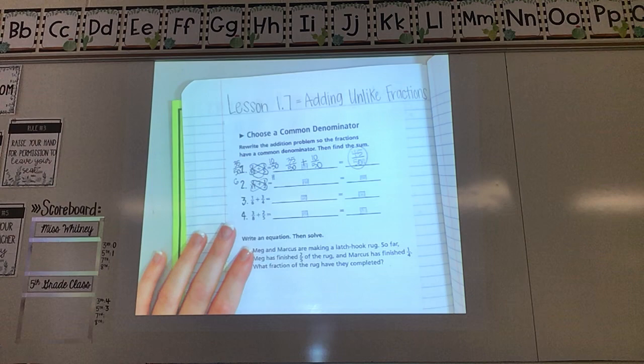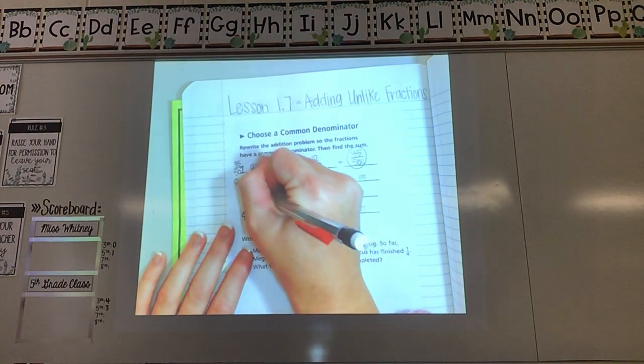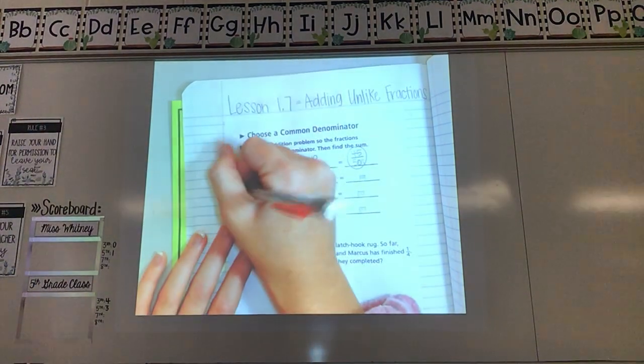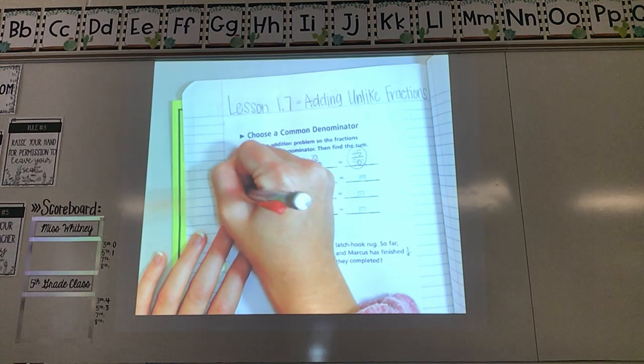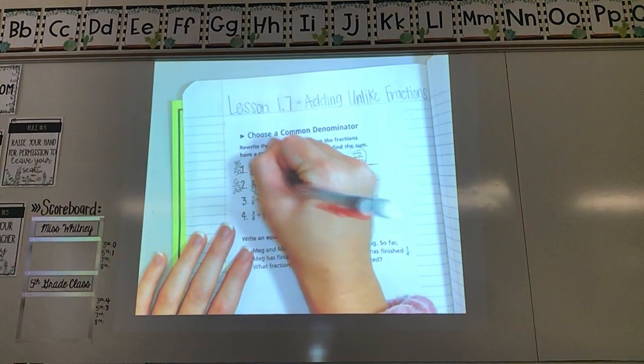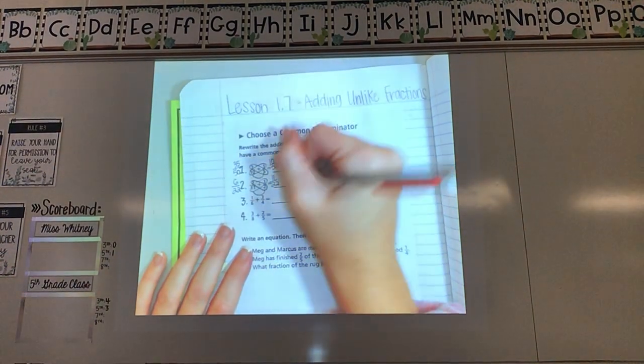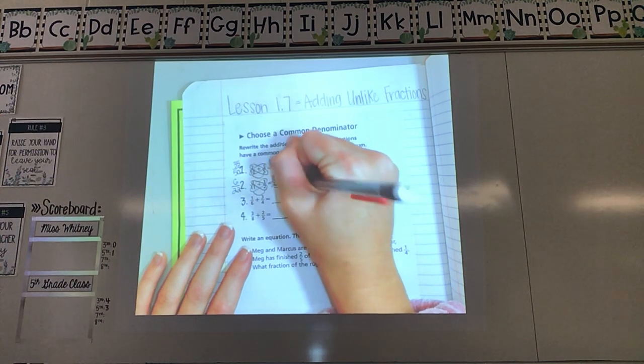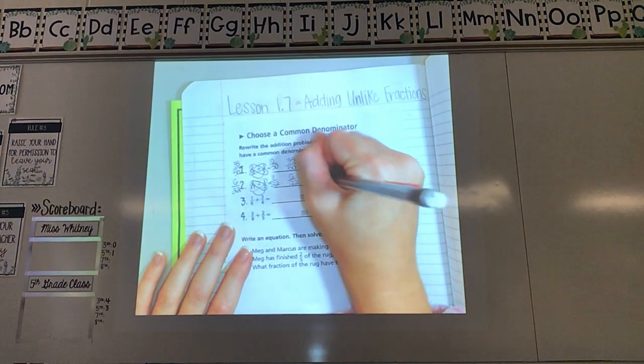Once I've cross multiplied, I have to multiply the 2 on the bottom. So 11 times 2 would be 22. So I'm going to add that underneath both of these. And copy down the fractions that I got. 6 twenty-seconds and 11 twenty-seconds.